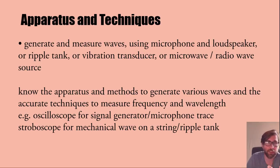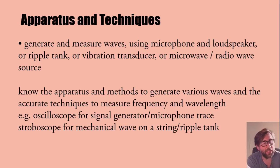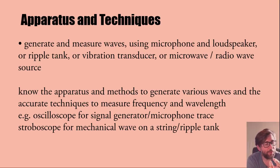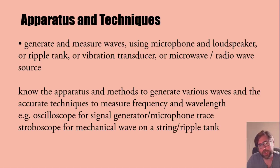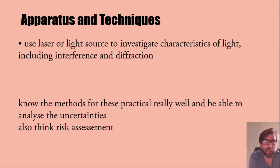Think about how and when you would make different types of waves. Use a microphone and loudspeaker to measure or create sound waves, ripple tanks with a vibration generator, a signal generator, or microwave and radio wave kits. Make sure you know the methods to generate and measure waves. There are different ways of measuring frequency for a water wave versus a mechanical wave. On a signal generator you'd use an oscilloscope; you might use a stroboscope to measure the frequency of a mechanical wave, and a ruler to measure its wavelength.